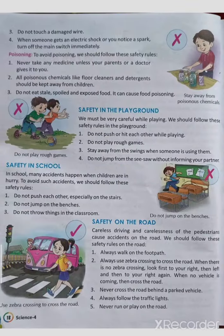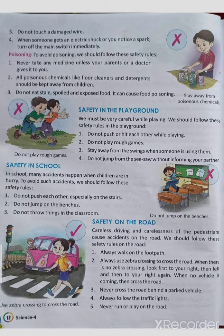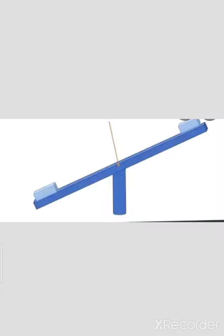Do not jump from the seesaw without informing your partner. Seesaw में play करते समय, जब उतरना हो तो अपने partner को inform करना है — without inform किये नहीं उतरना, नहीं तो पूरा weight उन पर आ जाएगा और partner hurt हो सकता है। Always inform your partner before getting off the seesaw.